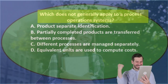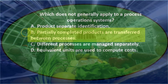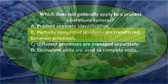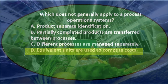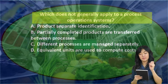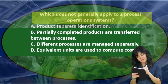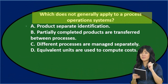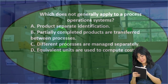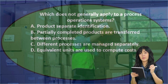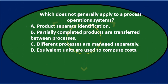Next question: which does NOT generally apply to a process operations system? A) products have separate identification, B) partially completed products are transferred between processes, C) different processes are managed separately, D) equivalent units are used to compute costs. I'm thinking of a process cost system as opposed to a job cost system, and 'process operations' is a term for a process cost system.